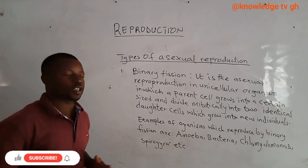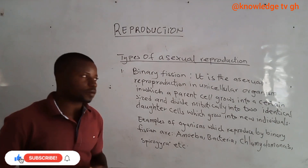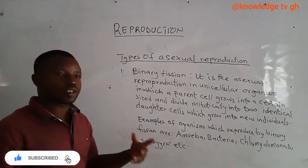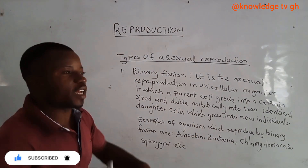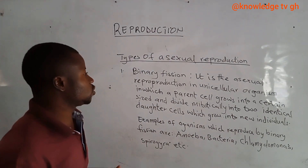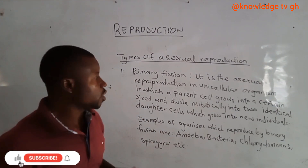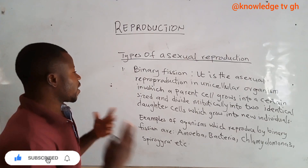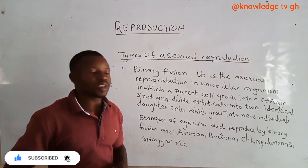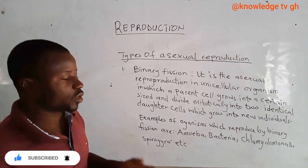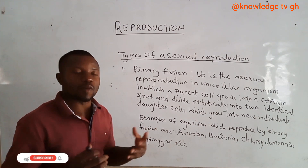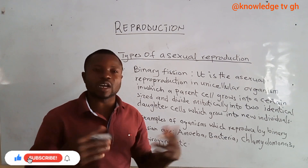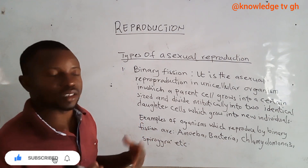Binary fission is the asexual reproduction in a unicellular organism in which a parent cell grows to a certain size and divides mitotically into two identical daughter cells, which grow into new individuals. Examples of organisms that reproduce by binary fission include amoeba, bacteria, chlamydomonas, spirogyra, and others like euglena and so forth.